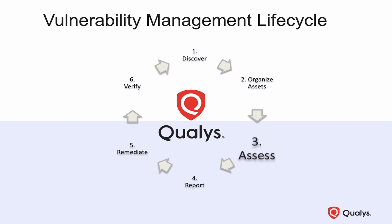The asset groups and tags you create will become ideal targets for performing vulnerability scans in the assessment phase. The primary objective of the assessment phase is finding vulnerabilities on the host assets in your Qualys subscription. The data needed to perform a vulnerability assessment can come from a combination of Qualys sensors, scanner appliances, or agents. All findings are securely stored in the Qualys Cloud Platform where reporting tools and features allow you to identify the vulnerabilities that pose the greatest risk to your organization and share these findings with your patch and operational teams.